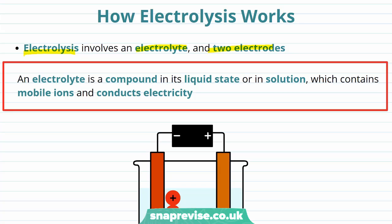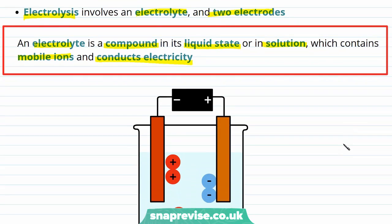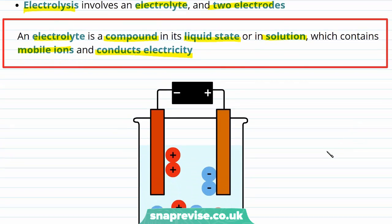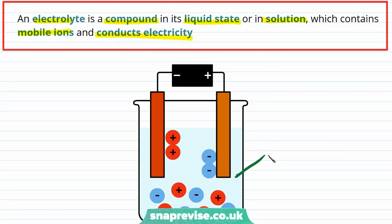The electrolyte in the electrolysis experiment is the ionic compound that is in its liquid state or in solution. As we mentioned on the previous slide, an ionic compound that is a liquid or in solution will contain mobile ions. The presence of ions that can move around enables these substances to conduct electricity. This diagram shows the setup in an electrolysis experiment, and the liquid in the beaker is the electrolyte, which you can see contains positive and negative ions.